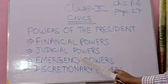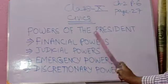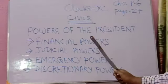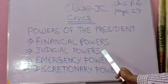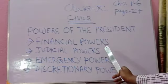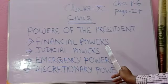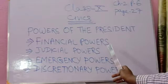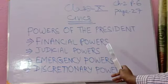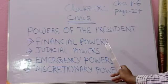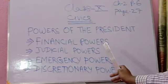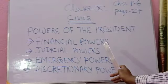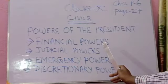The president is not answerable to any court of law for the exercise of his powers and duties. Additionally, no criminal proceeding can be initiated against the president in any court of law during his term of office. During his term of office, no criminal cases can be started against him in any court of law inside the country.